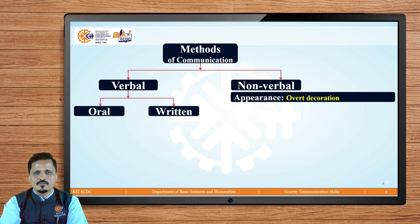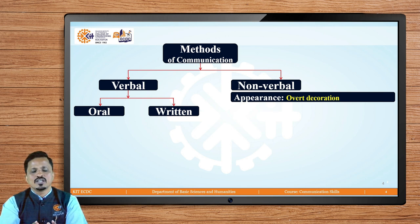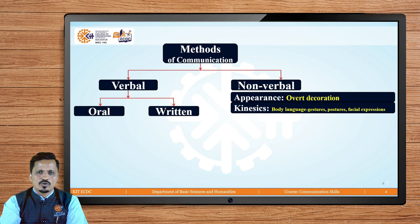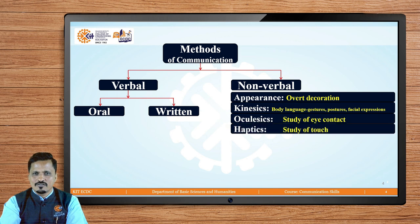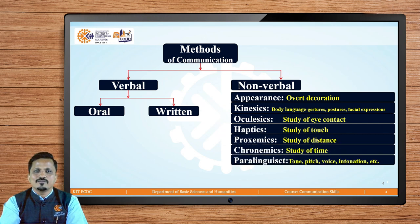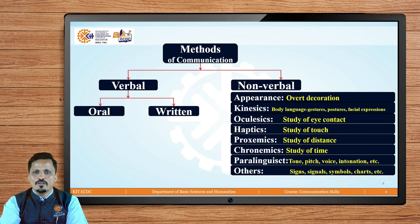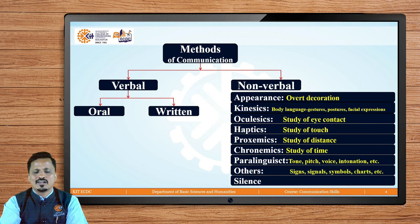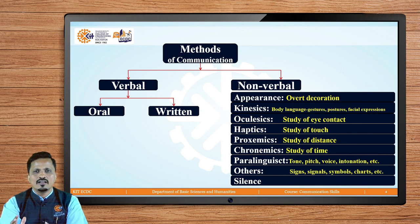Verbal includes oral and written communication, whereas non-verbal communication is a very huge area of research and it includes varieties of things like appearance — that is your overall decoration — kinesics — that is your body language, gestures, postures, facial expressions — oculesics — study of eye contact — haptics — study of touch — proxemics — study of distance — chronomics — study of time — paralinguistics — tone, pitch, voice, intonation, etc. Some others include signs, signals, symbols, charts, and silence. We are going to discuss non-verbal communication in detail in our next lessons.